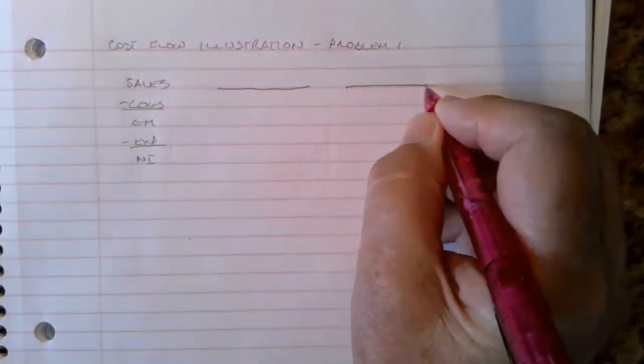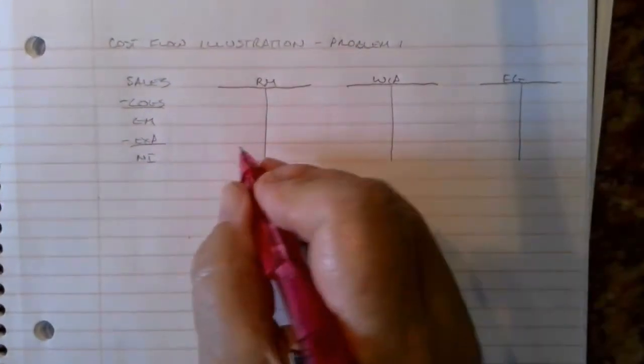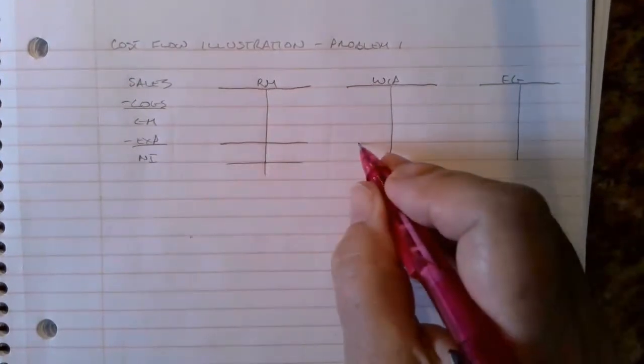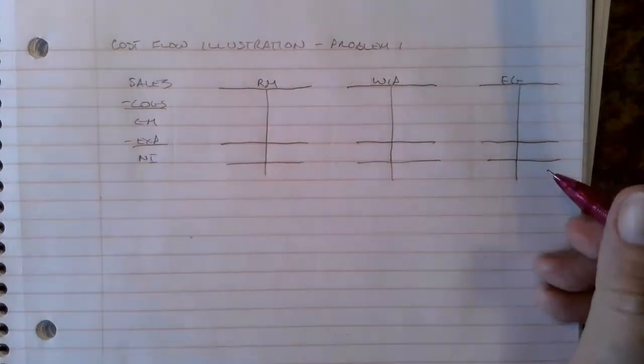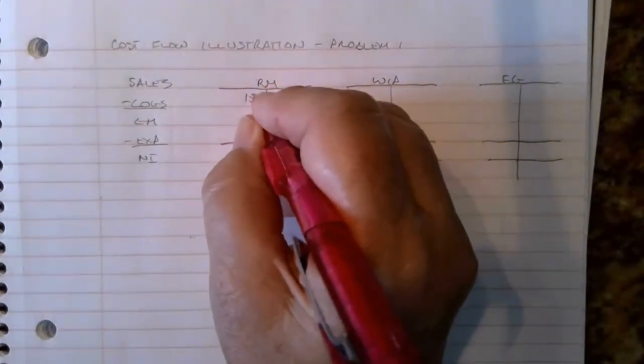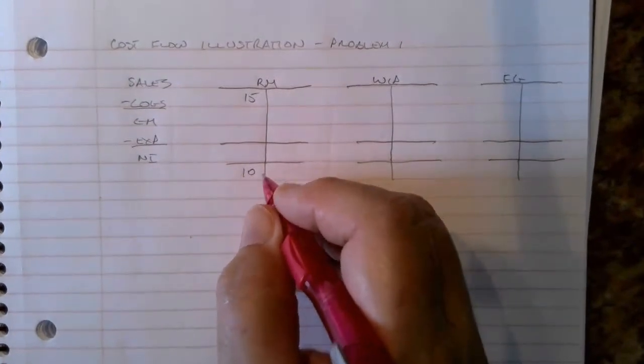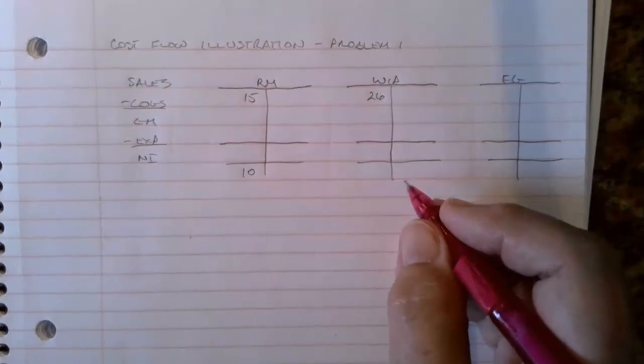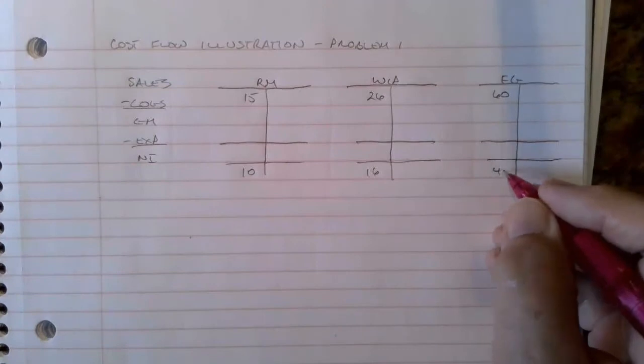So we'll start out with our T accounts for raw material, work in process, and finished goods. These are three inventory accounts. And make these pretty long because you never know what happens in here. And add an extra line, a subtotal line. It's like an extra check to keep from making dumb mistakes. So my raw material, my beginning balance is fifteen dollars. Don't you love simple numbers? At twelve thirty-one, our ending balance is ten. Work in process has a beginning balance of twenty-six, ending balance is sixteen. And finished goods, beginning balance is sixty, ending balance is forty.